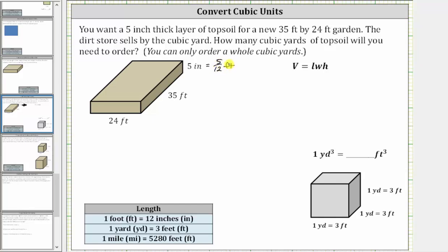Now let's determine the volume in cubic feet where the volume is equal to length times width times height. Therefore the volume is equal to 24 feet times 35 feet times five twelfths of a foot.